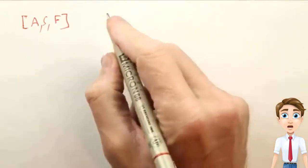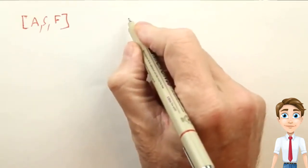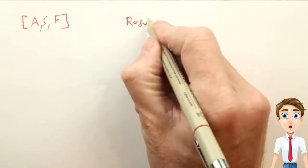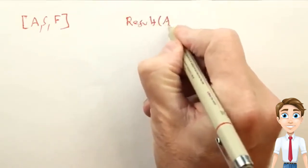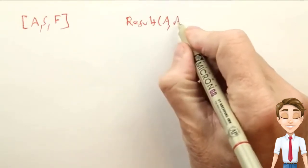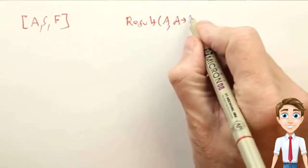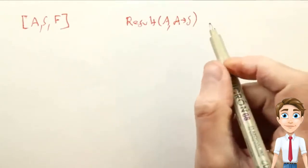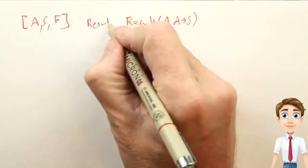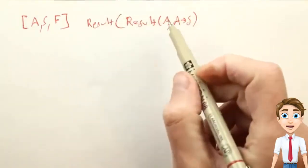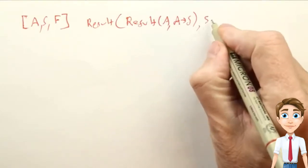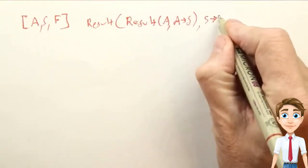If we want to be more formal and write that out mathematically, what we can say is, what this plan represents is we started in the start state, and then we transition to the state that is a result of applying the action of going from A to S to that start state.